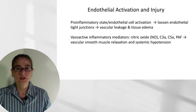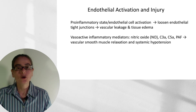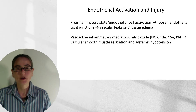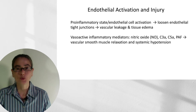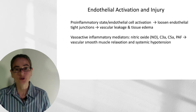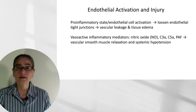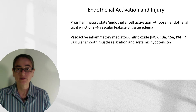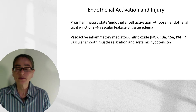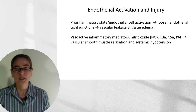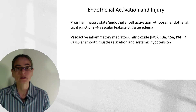The next major factor is endothelial activation and injury. This pro-inflammatory state leads to endothelial cell activation, causing a loosening of the endothelial tight junctions and resulting in vascular leakage and tissue edema, which reduces downstream perfusion. There is also release of vasoactive inflammatory mediators such as nitric oxide, C3a, C5a, and platelet activating factor, which act on vascular smooth muscle causing relaxation and leading to systemic hypotension — once more decreasing tissue perfusion.